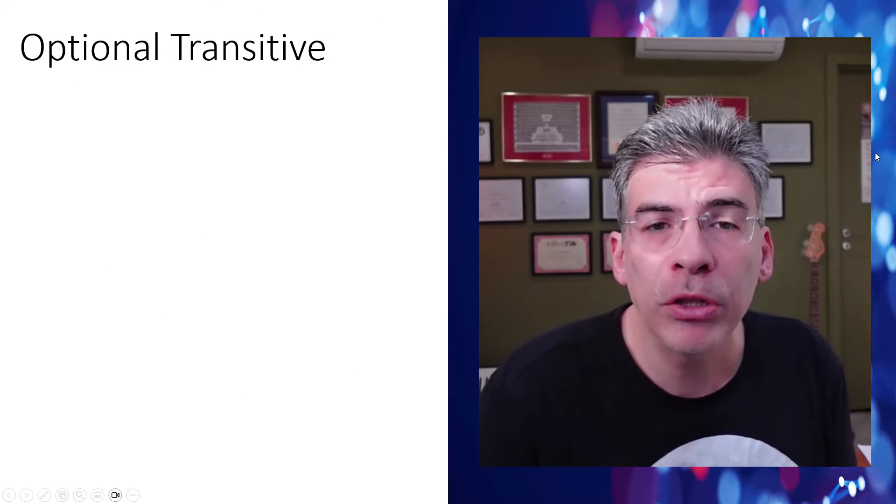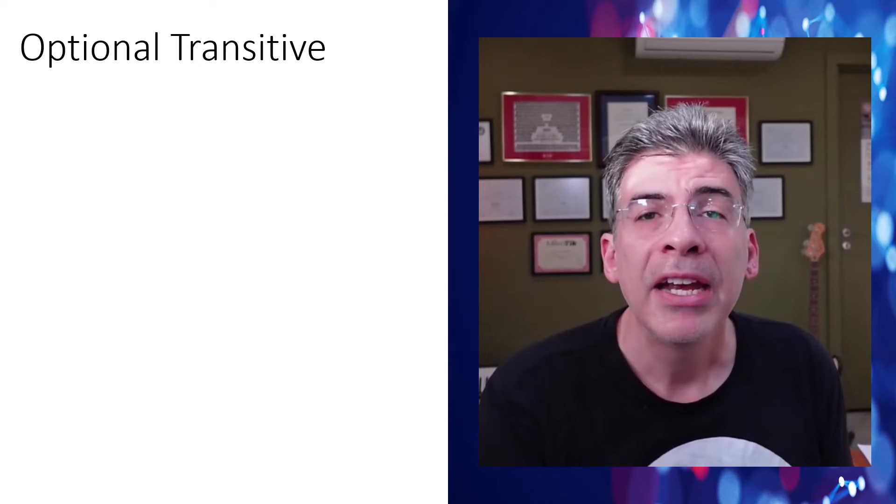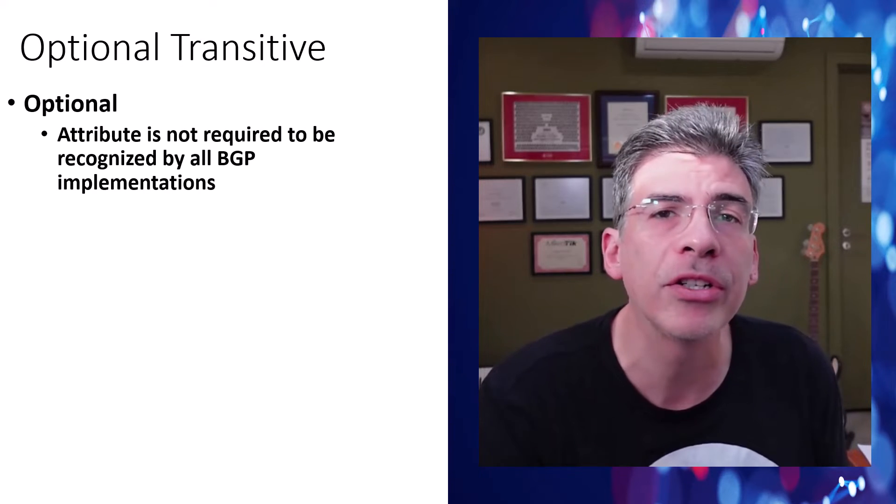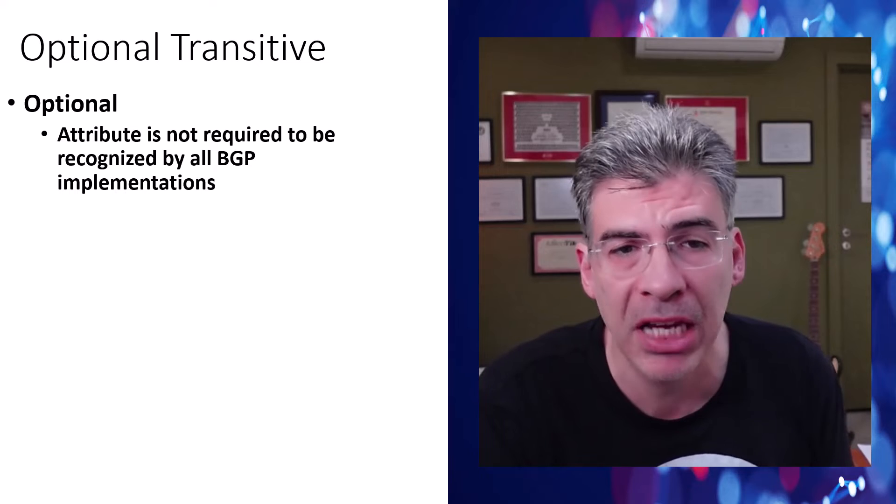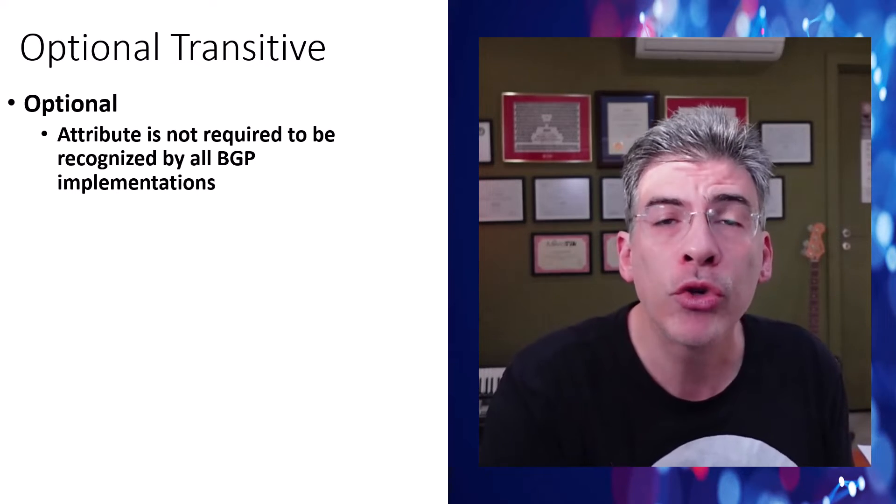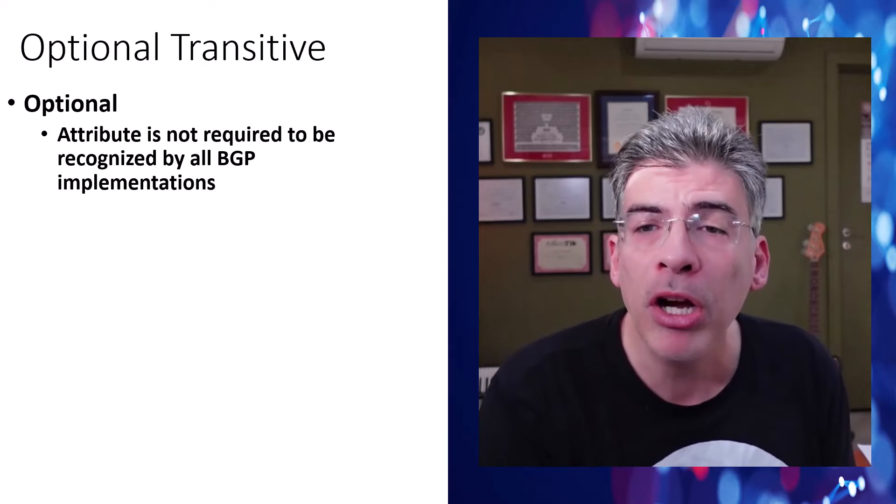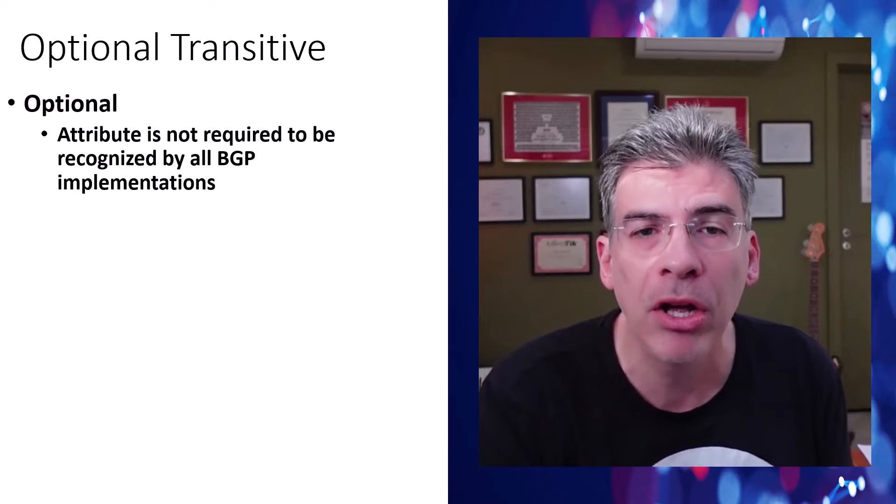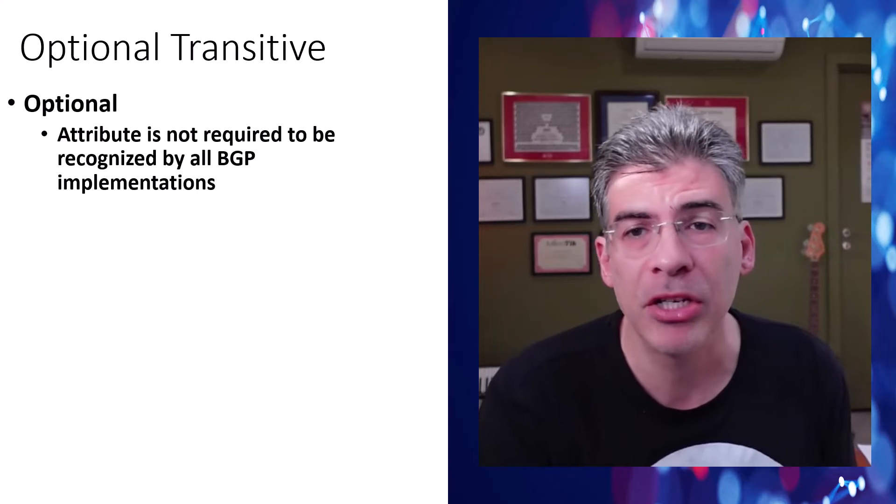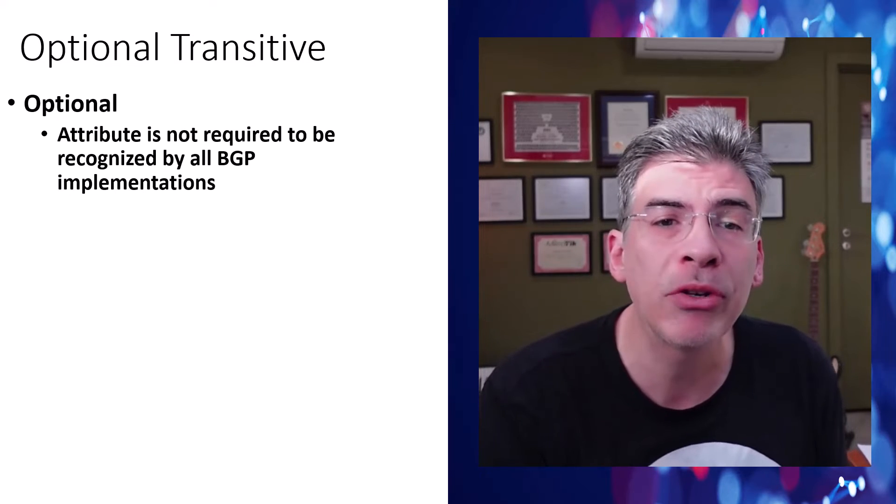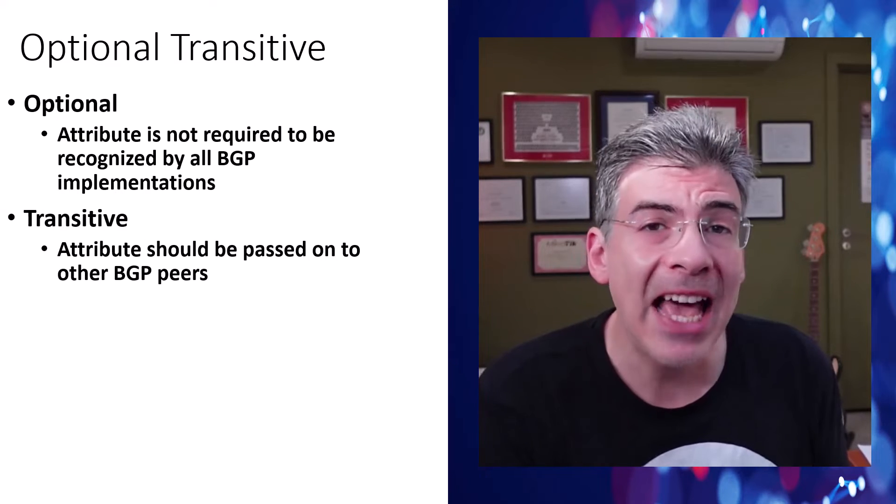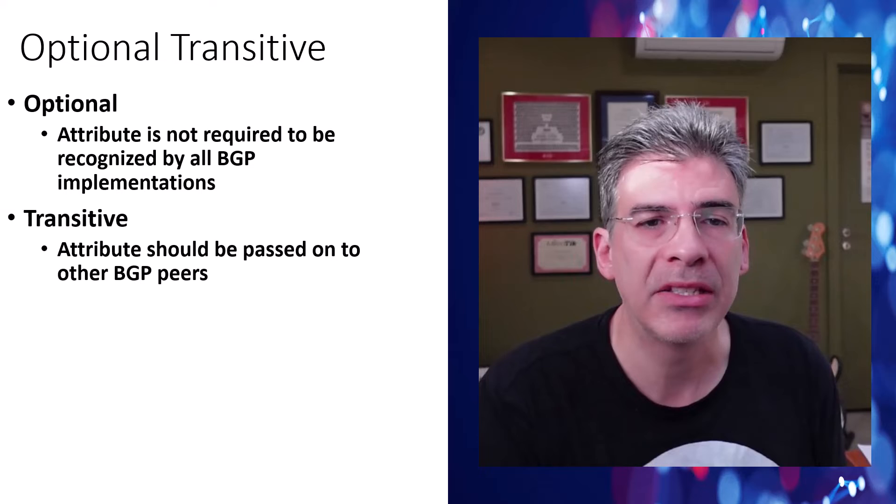On to the optional transitive attributes. Now, the word optional here means that these attributes are not required to be recognized by all BGP implementations. If a BGP router doesn't recognize an optional transitive attribute, it should mark the attribute and then pass it on to other BGP peers. It doesn't drop the BGP message. This ensures that the attribute is propagated even if some routers in the path don't understand it. And that's what the word transitive means here.